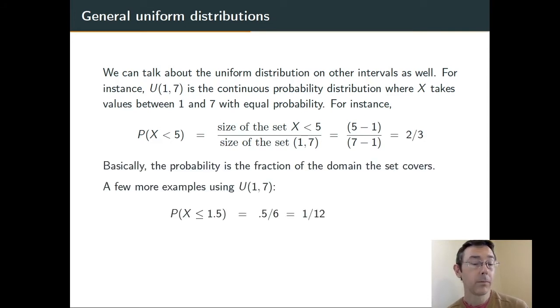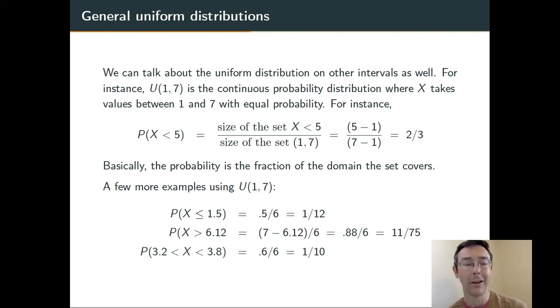A couple more examples. The probability that X ≤ 1.5 is going to be 0.5 over 6. The denominator stayed the same. The total width of the interval is 6 from 1 to 7. The numerator is the width of the set from 1 to 1.5. Overall, I get 1/12. The probability that X > 6.12 is going to be 11/75. I did the width of the interval from 6.12 to 7, divided by the total width of the interval, and then simplified a little bit. The probability that X is between 3.2 and 3.8 is 0.6 over 6, or 1/10.